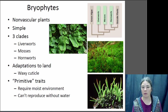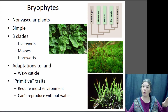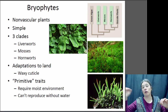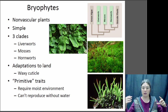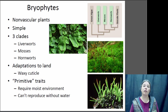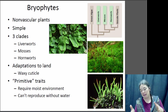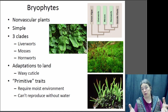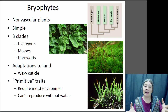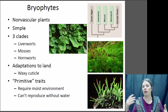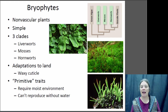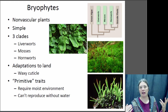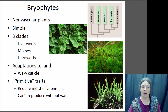They do have some pretty primitive requirements — they require a moist environment and they can't reproduce without the presence of water. They need water for the sperm to swim from the male gametophyte to the female gametophyte. With the bryophytes, when you're looking at the green plant, that is the gametophyte, not the sporophyte like in all the other plants. So it's the gametophyte that is large; the sporophyte is small and dependent upon the gametophyte.